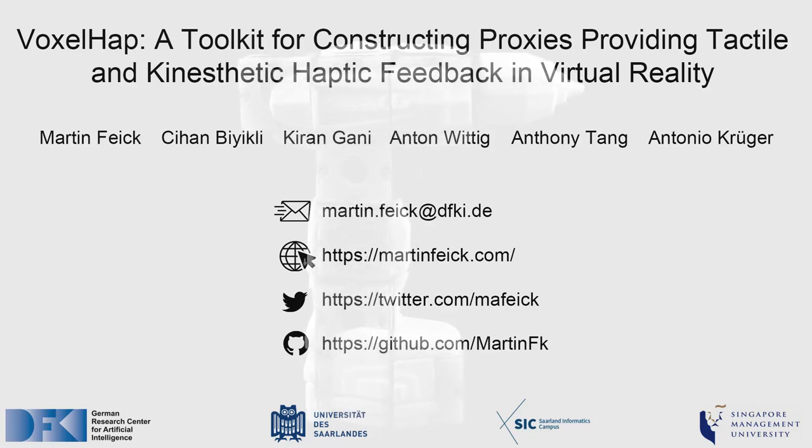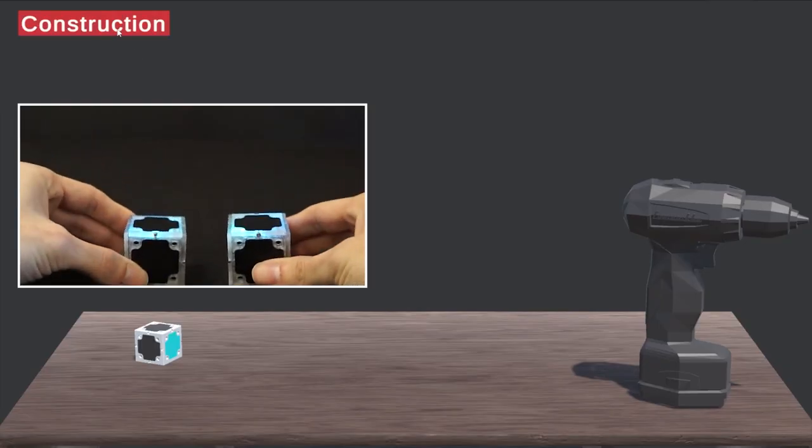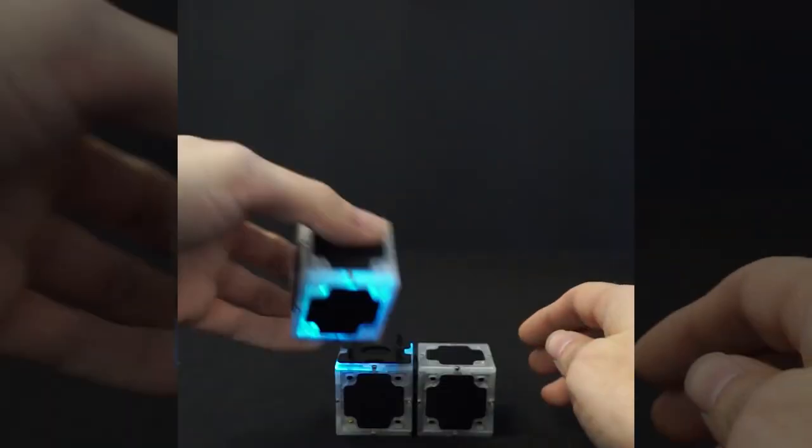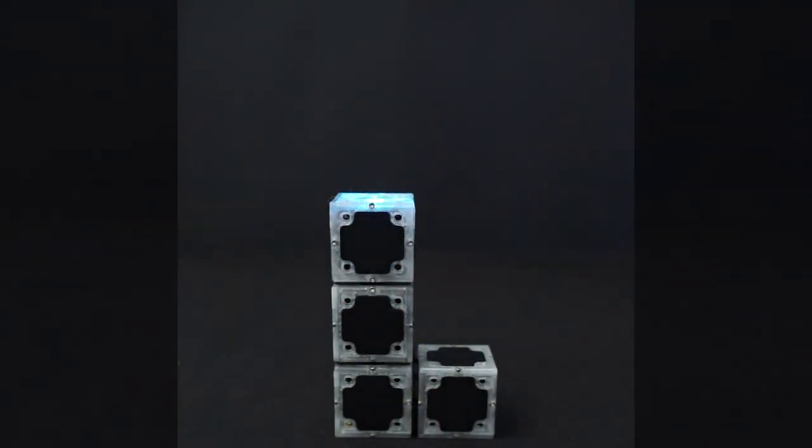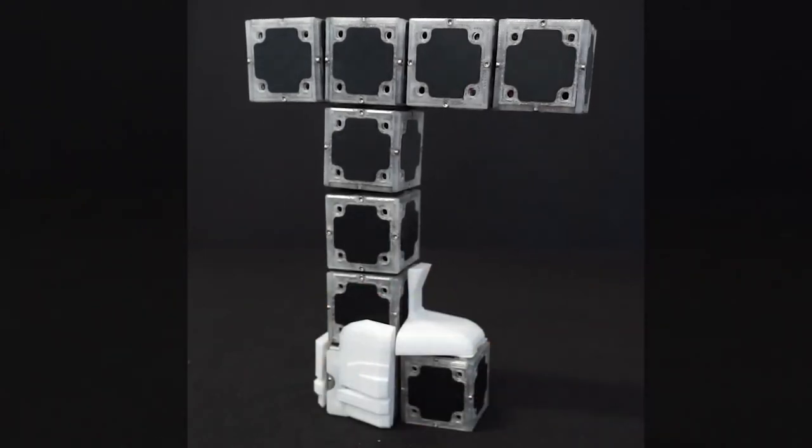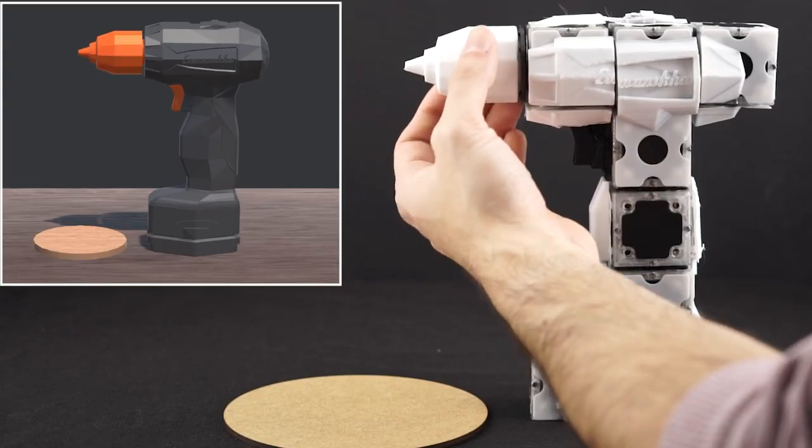We designed and implemented the VoxelHab Toolkit. A construction kit allowing users to rapidly build highly functional proxy objects. It consists of voxels, blocks with special functionalities that build the core of each proxy.